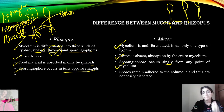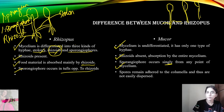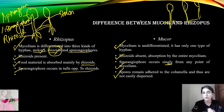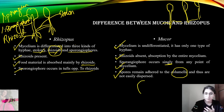Any part of the mycelium can develop a sporangiophore in Mucor because the rhizoid is absent. In Mucor, the spores remain attached to the columella — the sporangiophore is attached to a structure we call the columella.